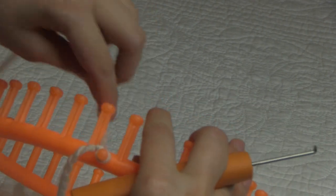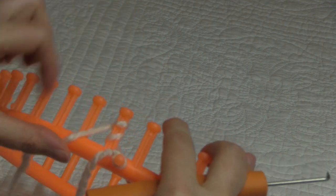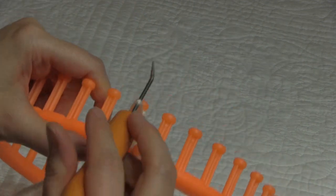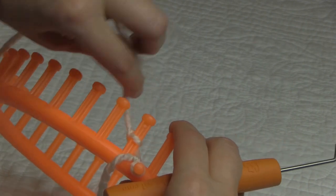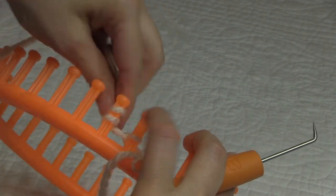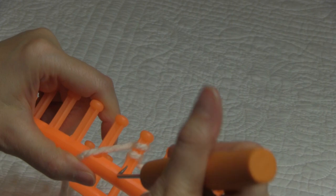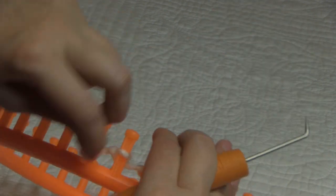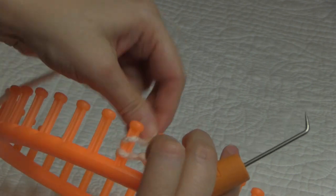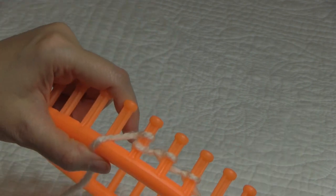We're going to double e-wrap each peg and knit off. Double e-wrap and knit off. We want to knit all the way around our loom and then we're ready to start our brim. So finish your cast on and meet me back here.